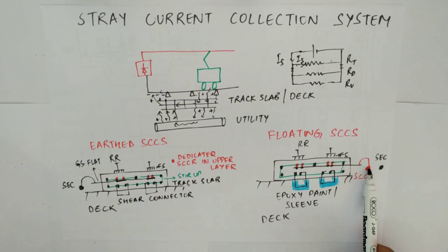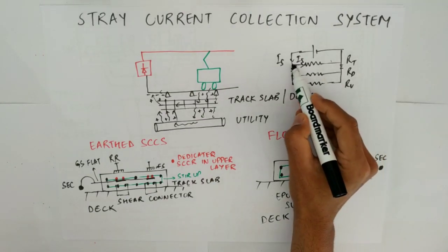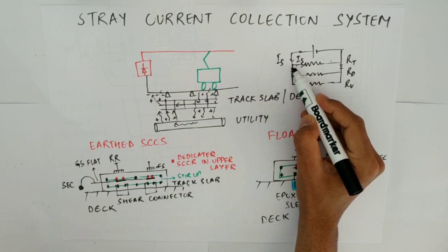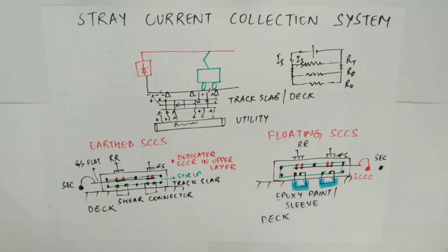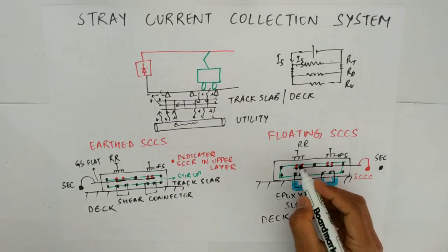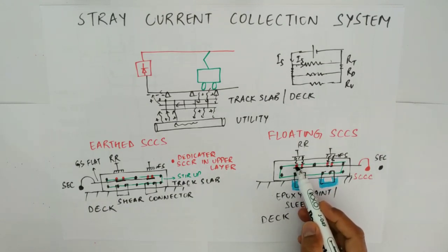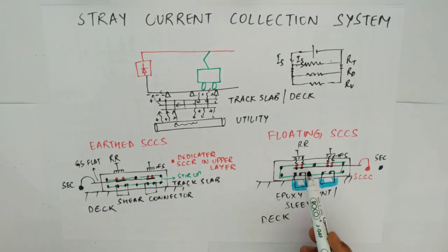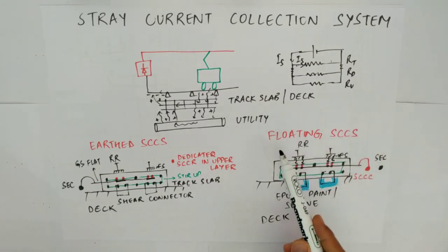This SCCC must be an insulated cable. From here there are some shear connectors which are connecting the track slab to the deck reinforcement. So you are trying to offer high impedance here — by offering high impedance you need to insulate, so you either provide an insulating sleeve or you do an epoxy paint to these shear connectors. By doing this, the current will flow in this path and when it tries to find another low resistance path below, it cannot go because it is insulated — so the current remains in the track slab itself and does not hurt the other utilities. This is why we provide this stray current collection system.